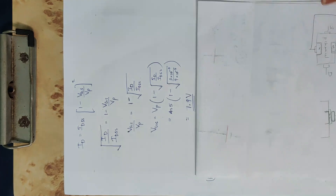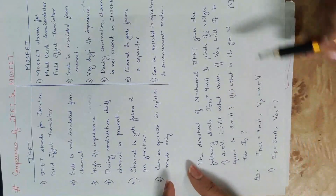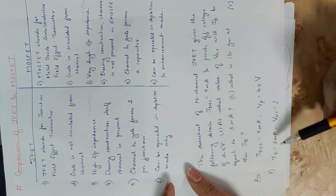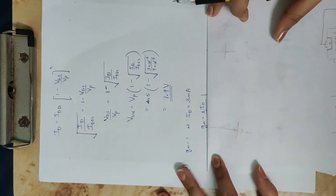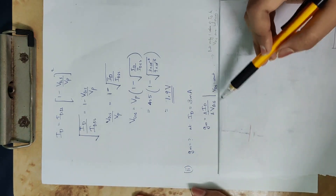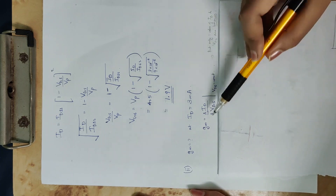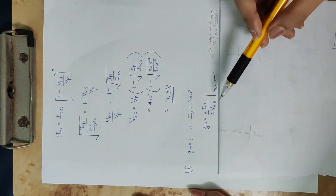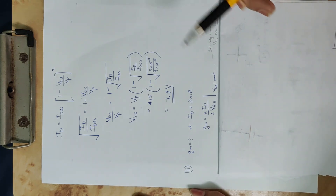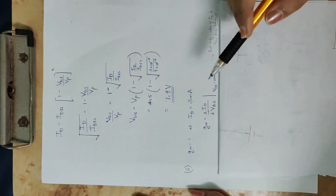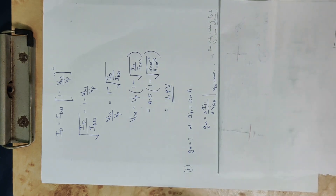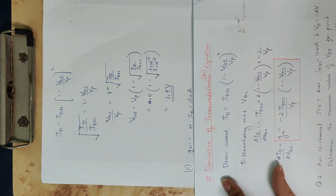The next part of the question asks for transconductance gm at this drain current of 3 mA. Transconductance is defined as gm = ΔID / ΔVGS when VD is constant — that is, the change in drain current divided by change in gate-source voltage. We need to derive another form of this equation since we have only one drain current and one VGS available.